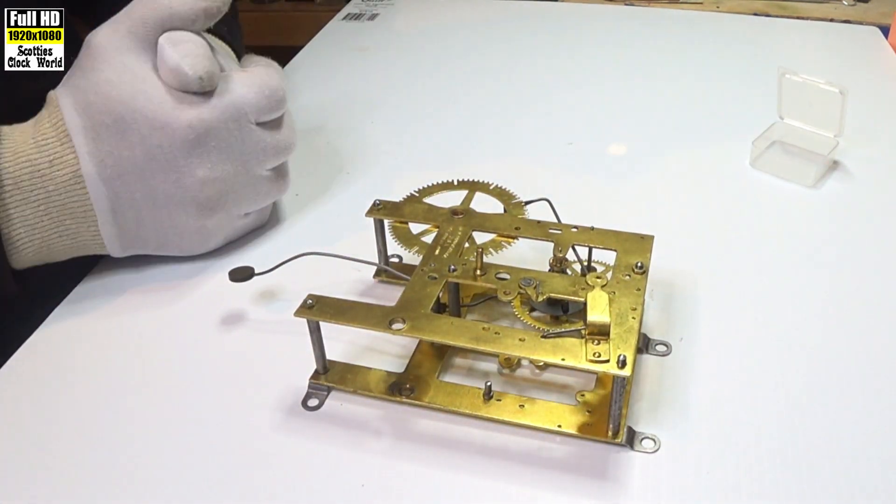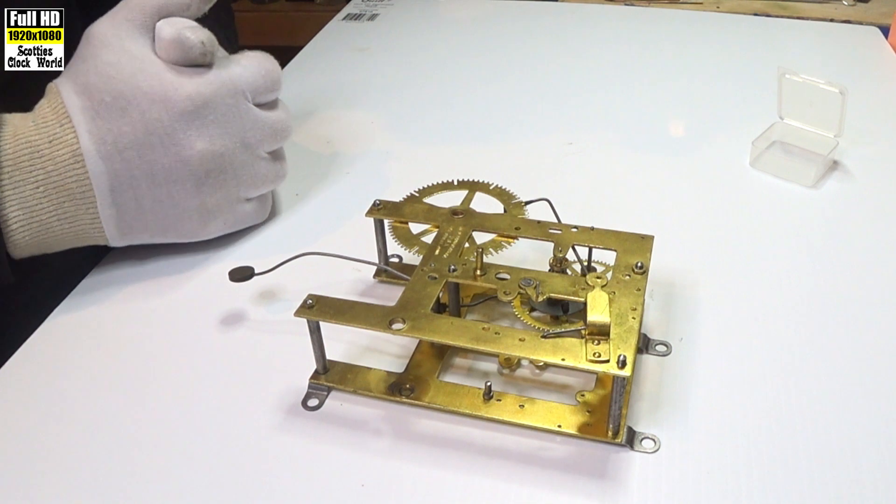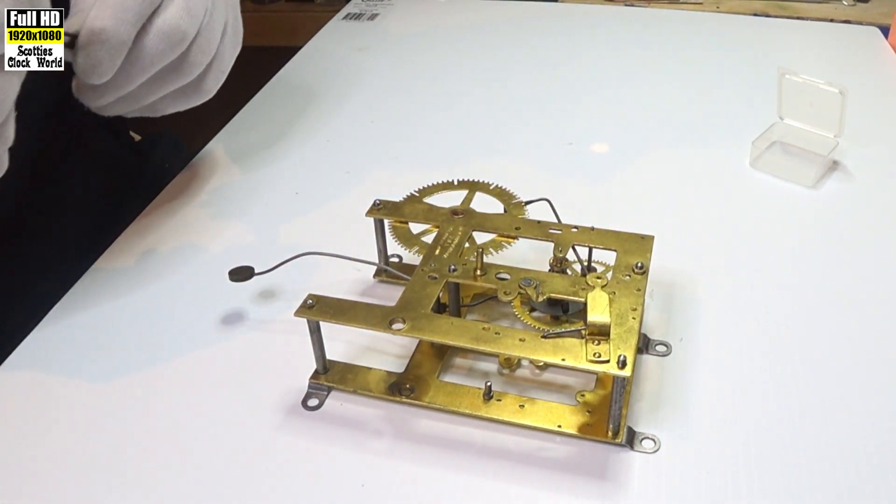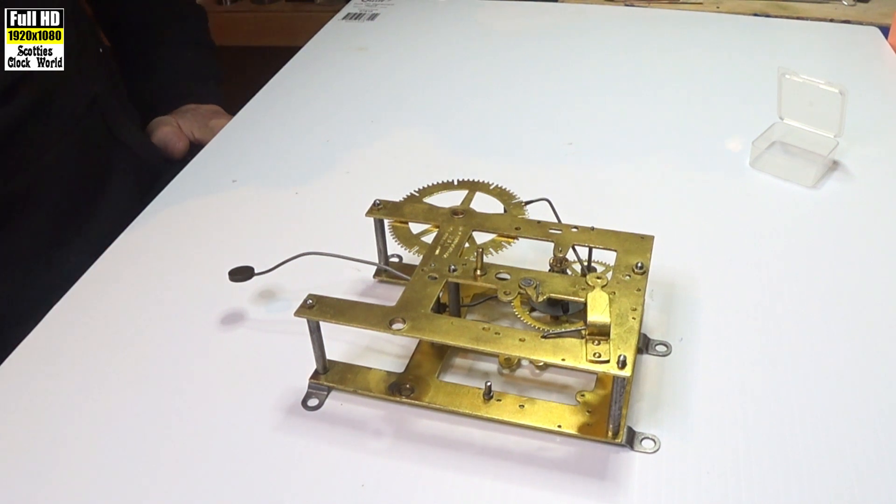And they're the three things you must have on an American clock to get it to operate correctly. If any of those three things are out, then it will not strike correctly. That's the lifting lever explained and how to set it up.